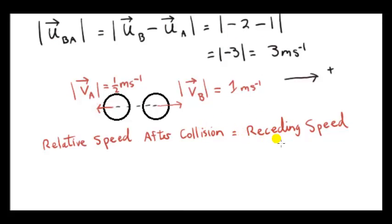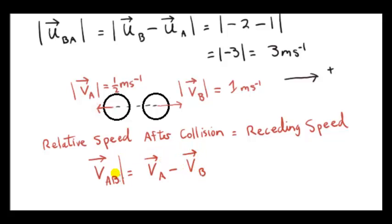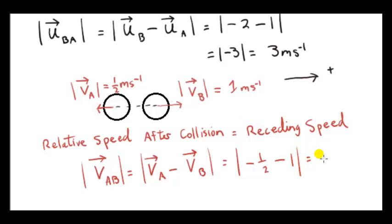Now let's consider the speed with which the spheres recede from each other — the rate at which the distance between the spheres increases. We could calculate the relative velocity of A with respect to B or of B with respect to A. I'll do VAB, so that's VA minus VB. We want the relative speed so we'll take the magnitude. VA is now pointing to the left, so the velocity of sphere A is minus one half. We subtract the velocity of sphere B, which is plus 1 because it's moving to the right. So we get the magnitude of minus 3 halves, or 1.5 meters per second.